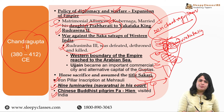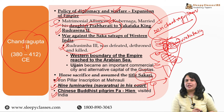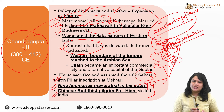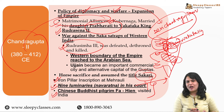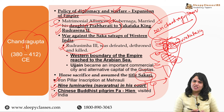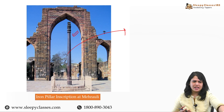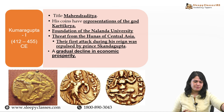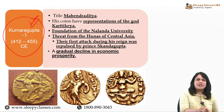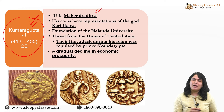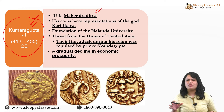Hum yahan pe dekhenge ki Chinese Buddhist pilgrim Faxian jo hai, woh bhi isi time pe Bharat aaye, aur unhon ne us time ki political, economic, socio-religious situation mein jo kuch observe kiya, use finally apni book ke andar document kiya - aur iska English translation hai 'A History of the Buddhist Kingdom'. Iske baad jo next important ruler hai, woh hai Kumaragupta First. Inhon ne Mahendraditya ka title liya. By and large inka jo time period hai, woh kaafi peaceful tha.